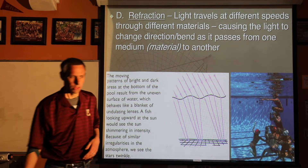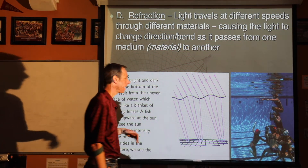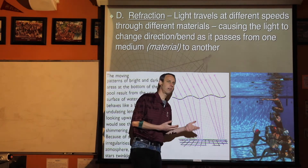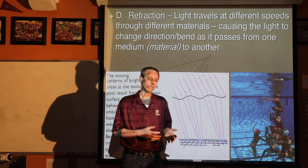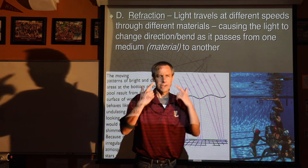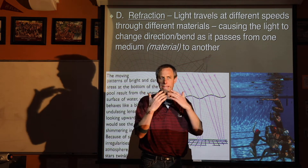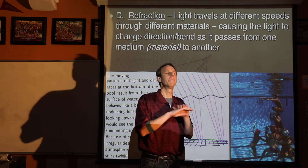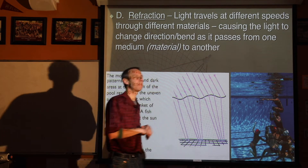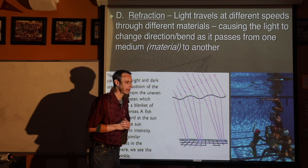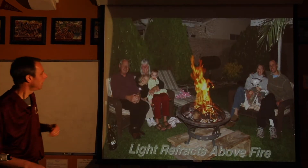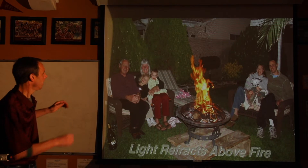So with refraction, the point is that when light enters a new medium, it turns. This is how lenses work, and how your eyeballs work. We turn the light because it entered your eyeball — it gets hung up on the edge, just like your wagon hitting that lawn.